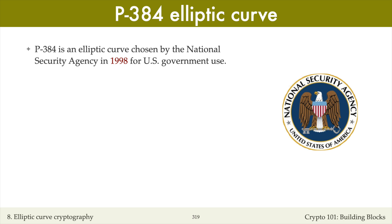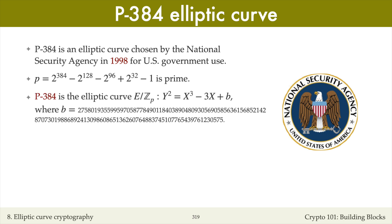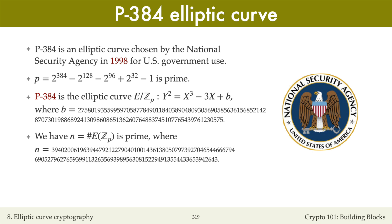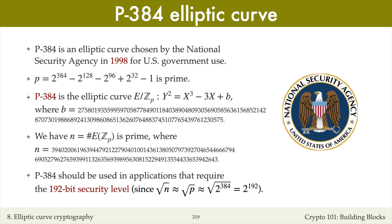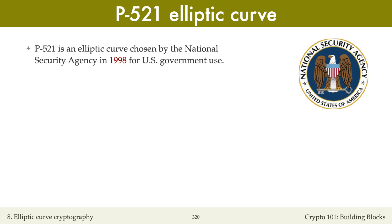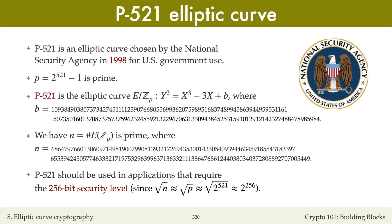P384 is the second elliptic curve chosen by the NSA in 1998 and standardized by NIST. The prime p is a nice 384-bit number. The defining equation is y² = x³ − 3x + b, where b is a number between 0 and p−1. The number n of points is a 384-bit prime. P384 should be used in applications that require the 192-bit security level. P521 is the third curve selected, where p is a 521-bit Mersenne prime, and P521 should be used for applications requiring the 256-bit security level.